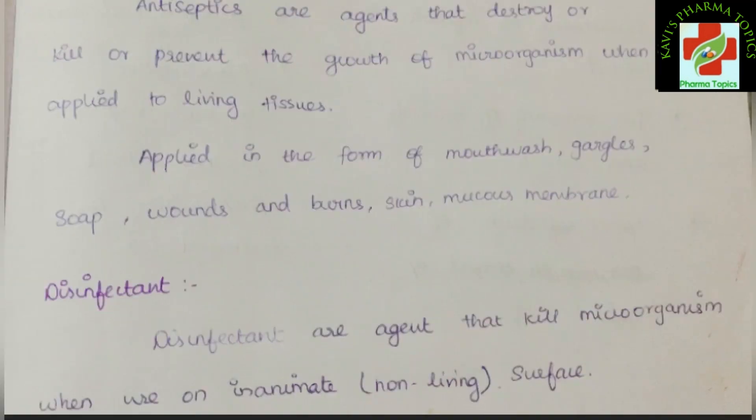Disinfectant is the agent that kills microorganisms when used on inanimate, non-living surfaces. So antiseptic destroys or kills and also prevents the growth of microorganisms applied to living tissue, but disinfectant is used on inanimate non-living surfaces.